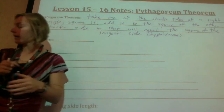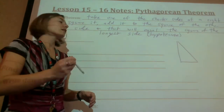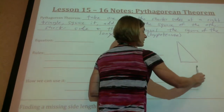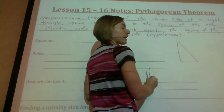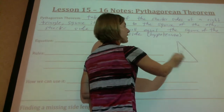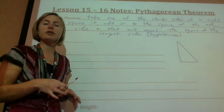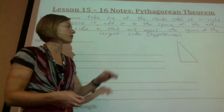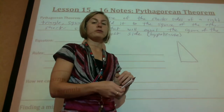So if I take the square of the length of this side plus the square of the length of this side, it's going to add up to the square of the length of this longest side. The longest side we call the hypotenuse. You don't need to know that at this level, but in high school they will expect that you know that.